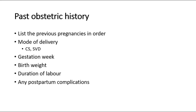Next, we have to ask about the past obstetric history and list the previous pregnancies and their outcomes in order. We have to ask how many previous pregnancies she had, how was the outcome — whether the babies are alive or not, were there any abortions or miscarriages. How was the mode of delivery — whether caesarean section or spontaneous vaginal delivery? How many weeks of gestation when they were born? Their birth weight? The duration of labor, and any complications after delivery?